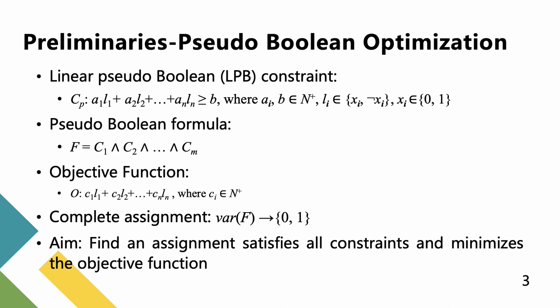A pseudo-boolean optimization problem consists of a PB formula F and an objective function O. A PB formula is a conjunction of PB constraints. An objective function is the sum of ci times li. The PBO problem aims to obtain a feasible solution for F with the minimum objective value.